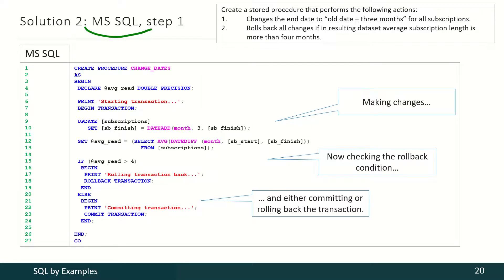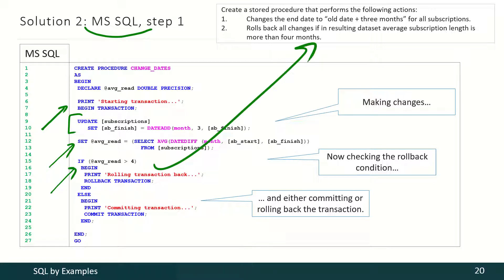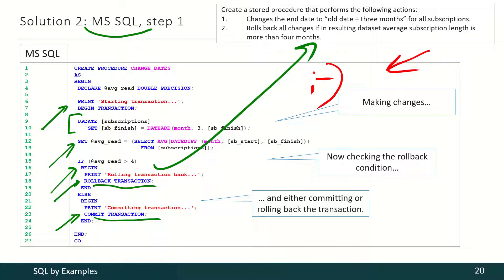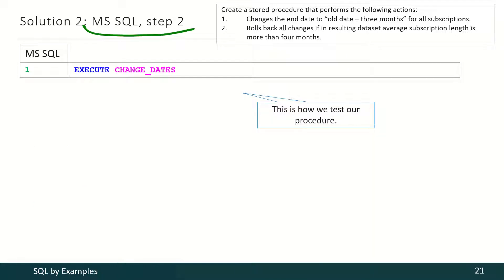In Microsoft SQL Server we are following the same approach. We are starting the transaction, updating the data, calculating the average subscription length, and then checking for this condition. If it is violated we have to roll back the transaction; otherwise we have to commit it. But there is an attentiveness test for you — in this code there is some issue. Please pause the video and find that issue. To test this procedure in Microsoft SQL Server we just have to execute such a simple query.